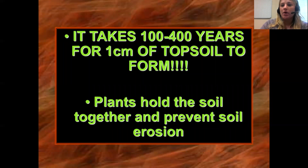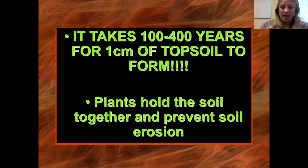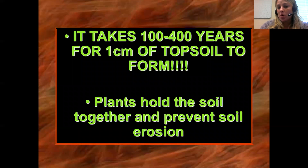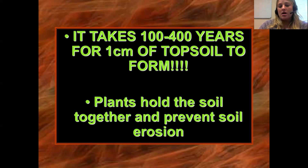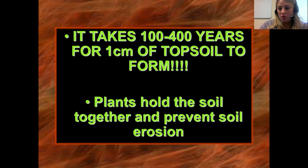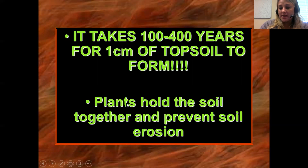Here's an interesting fact: it takes about 100 to 400 years for just one centimeter of topsoil to form, so this is a very long process. One really important thing to realize is that plants hold soil together and prevent it from being transported. There's controversy around removing plants to build housing communities, which leaves nothing to stop erosion — causing flooding in areas that haven't seen it before. After wildfires, once plants and trees are burned, you'll also see a lot of erosion.